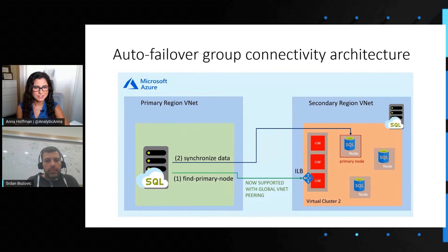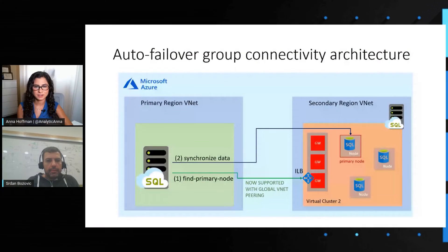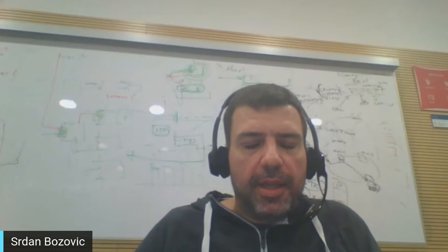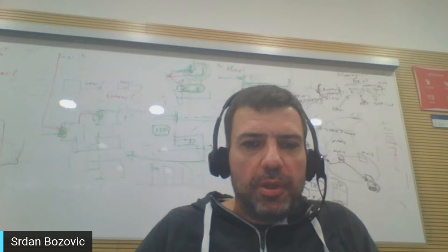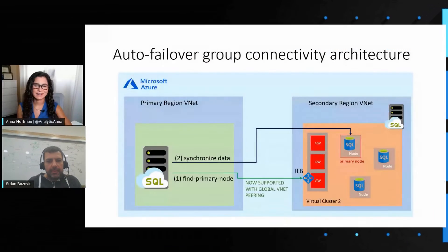So to summarize: for SQL MI to get Global VNet Peering support, it needs to be created in an empty subnet, or it needs to be created in a subnet with instances that already have Global VNet Peering support. Is that the right way to think about it? Excellent — that's really the essence of it.